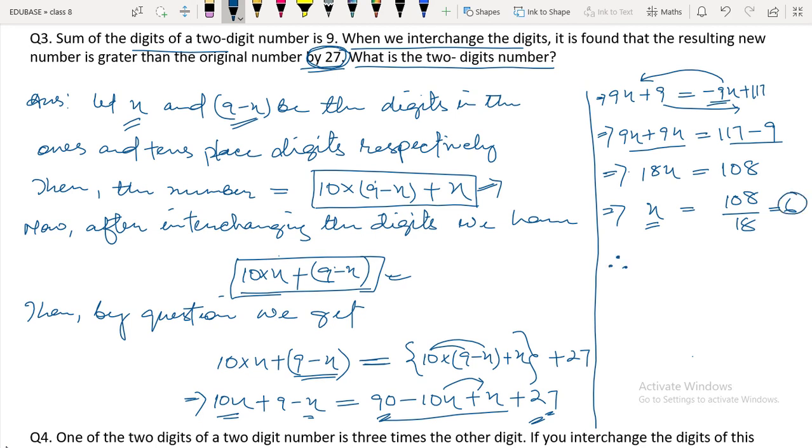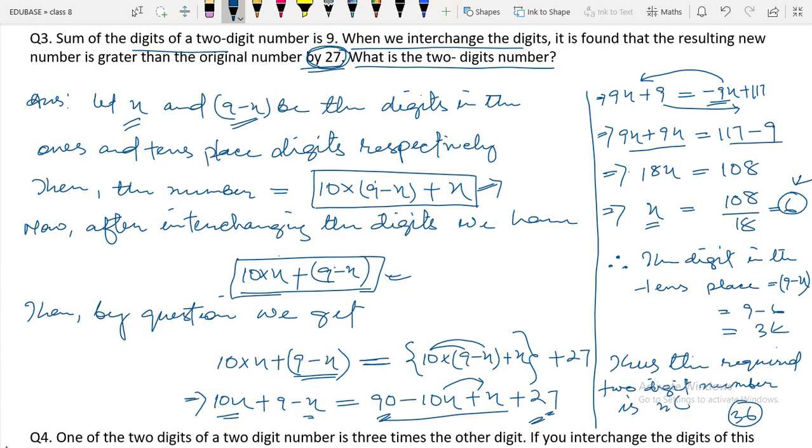Therefore the digit in the tens place is 9 minus x, which equals 9 minus 6, which is 3. So the ones place digit is 6 and the tens place digit is 3, making the number 36. Therefore the required two-digit number is 36.